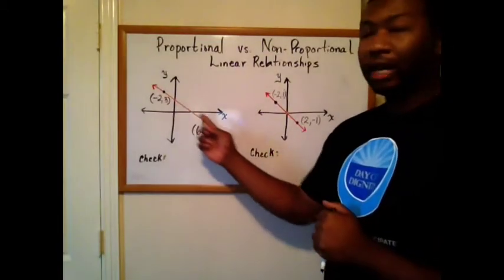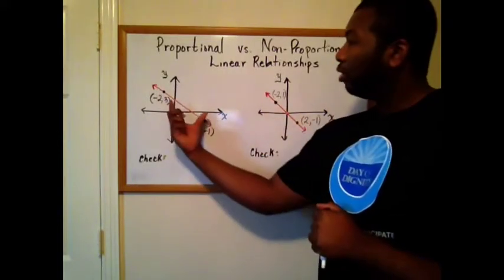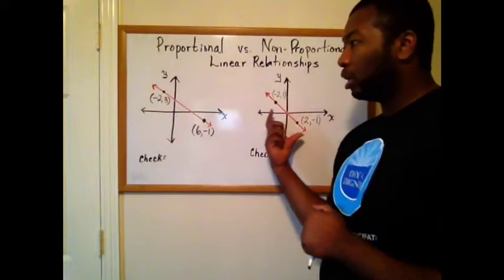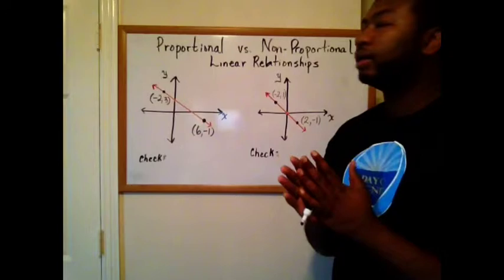On each line, we've identified a pair of points. And knowing what those points are will be key to determining are they proportional or not. Here's how I check.